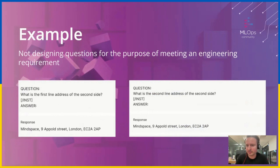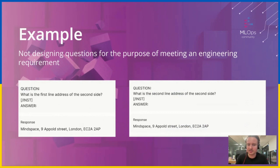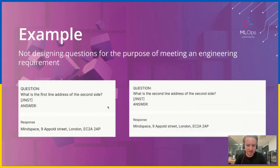One thing we encountered — especially with forms containing addresses with a first line and a second line — is that our software team initially suggested splitting the prompts into 'first line address' and 'second line address.' In practice, that just confuses the model. It's important to detach yourself from the engineering requirement and think about what makes sense for the model. As you can see in the example, asking for first line address and second line address separately gives the same answer — that's something to avoid.